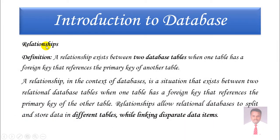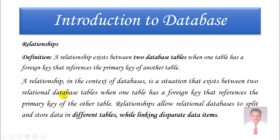What is a relationship? A relationship exists between two database tables where one table has a foreign key that refers to the primary key of another table. In order to retrieve data across multiple tables, we need relationships. The relationship allows a relational database to split and store data in different tables while linking related data items.